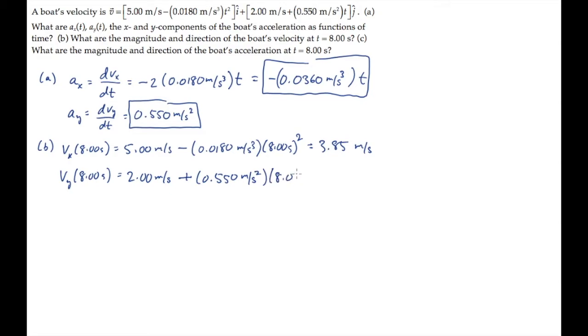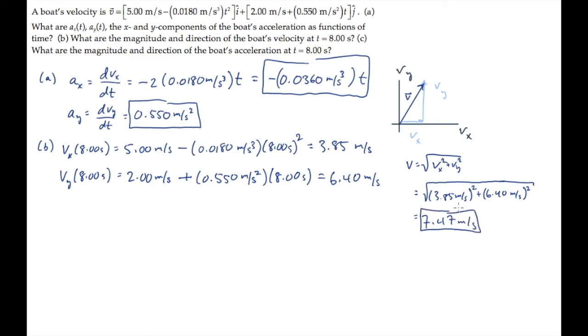To find that it equals 6.40 meters per second. We can then sketch that vector with an x component and a y component. Find its magnitude using the Pythagorean theorem. And it turns out to be 7.47 meters per second. That's the boat's speed at t equals 8 seconds.